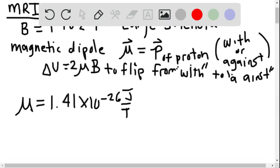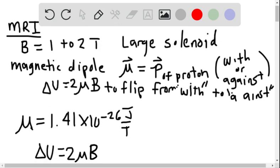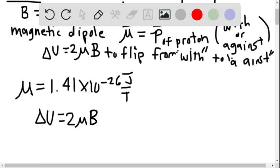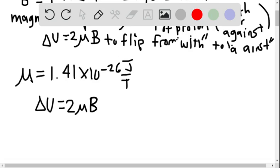So if we put that into our equation here, delta U equals 2 mu B, and I'm going to use 1.5 tesla as B. So let me just go ahead and calculate that. 2 times 1.41 times 10 to the negative 26 power times 1.5 tesla, because that's halfway between.